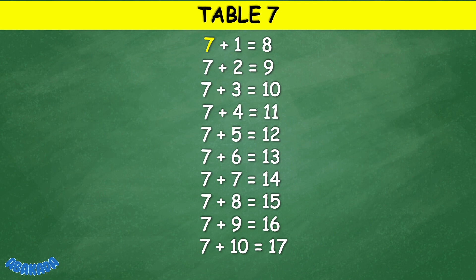Table 7: 7 plus 1 equals 8, 7 plus 2 equals 9, 7 plus 3 equals 10, 7 plus 4 equals 11, 7 plus 5 equals 12, 7 plus 6 equals 13, 7 plus 7 equals 14, 7 plus 8 equals 15, 7 plus 9 equals 16, 7 plus 10 equals 17.